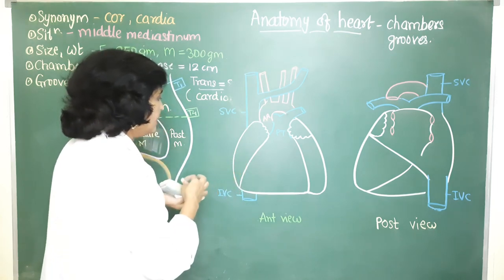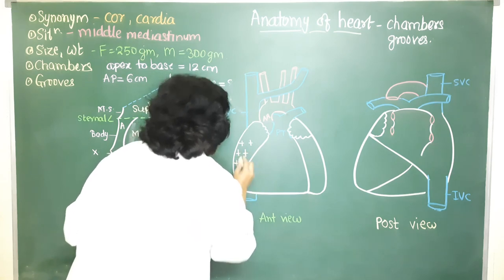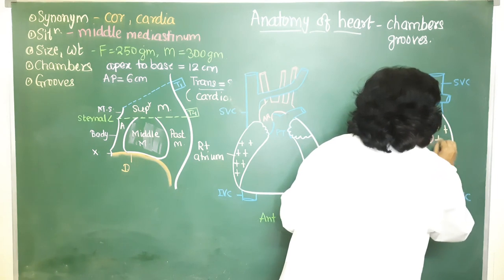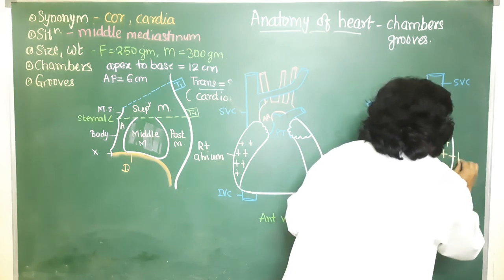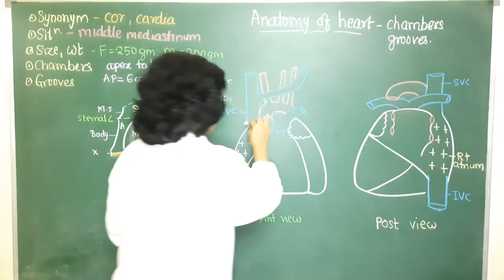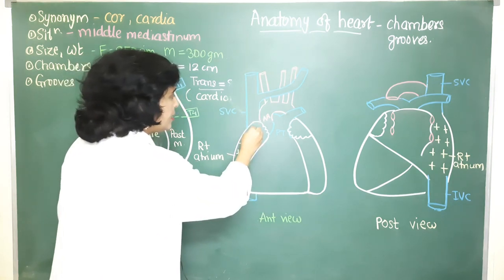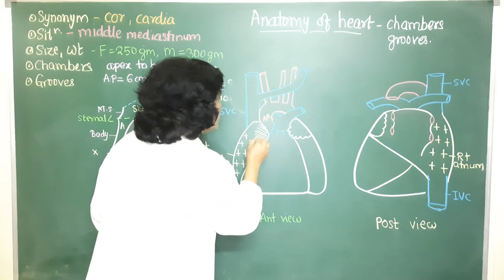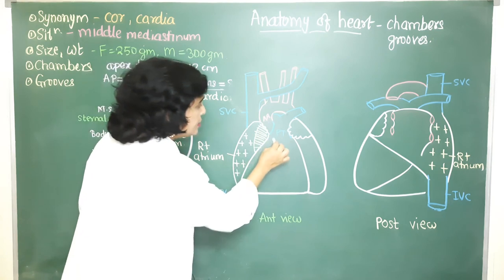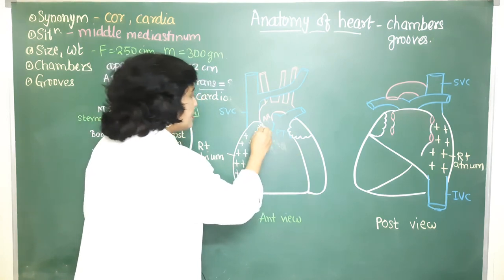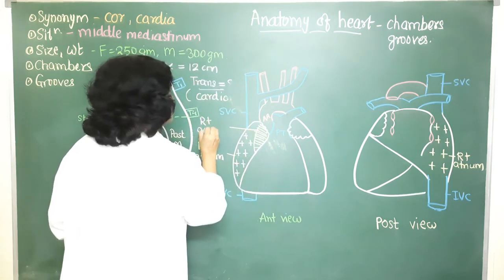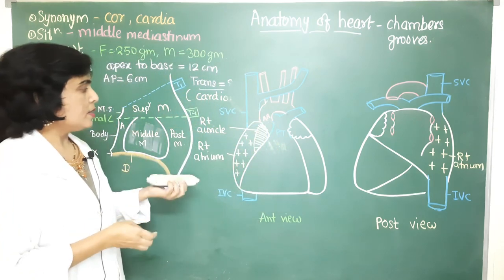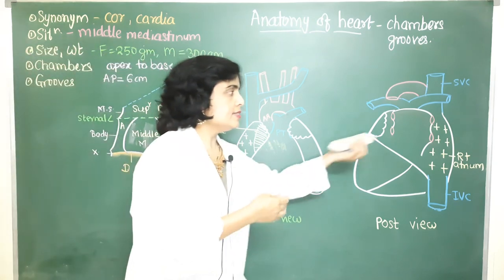The right atrium is an elongated chamber, reaching the superior vena cava at its upper end and inferior vena cava at its lower end. From its anterosuperior part, an ear-like appendage passes towards the left side, overlapping the root of the ascending aorta and the infundibulum of the right ventricle. This ear-like appendage is called the right auricle, which has notched margins.